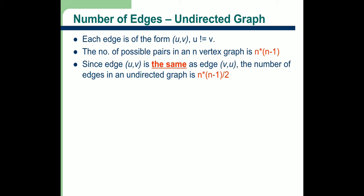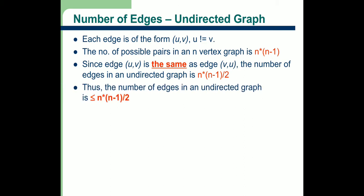That's why the number of edges is not exactly n into n-1; it is half of n into n-1. The number of edges in an undirected graph is less than or equal to n(n-1)/2. This is about the number of edges in an undirected graph.